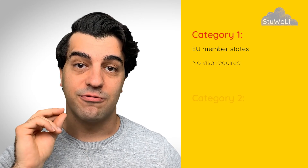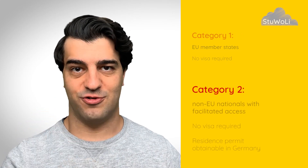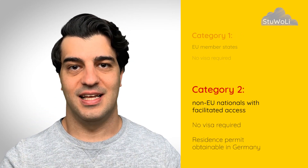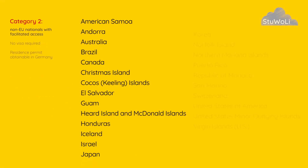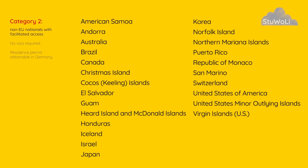If you are from category two countries, then in that case you can enter Germany without a visa, because your country has a sort of a treaty with Germany, and then you can apply for a study permit, a living permit, and a residence permit inside Germany at the city where you will be residing.